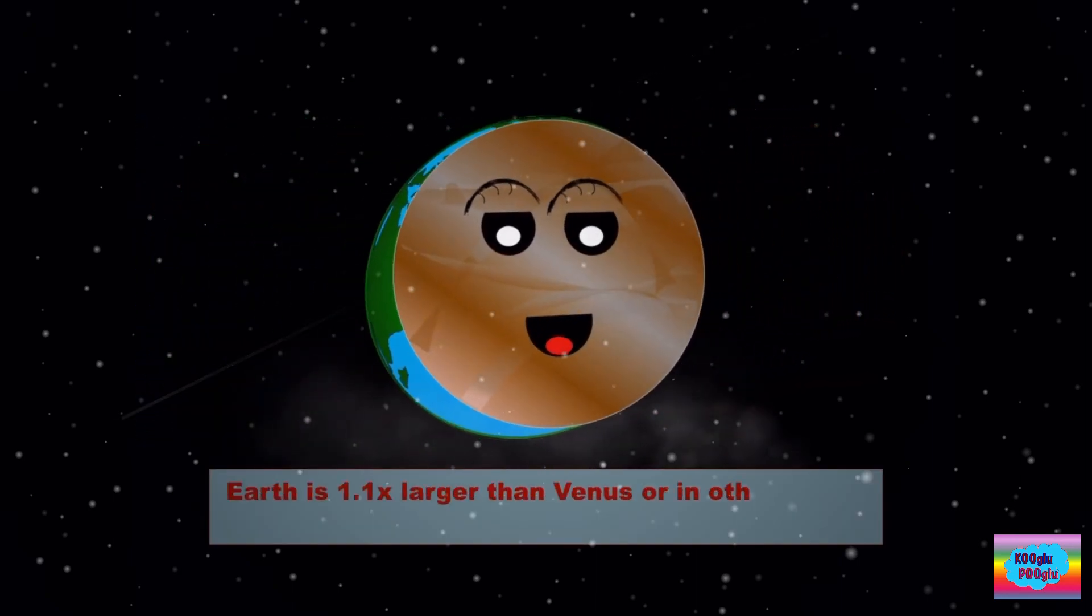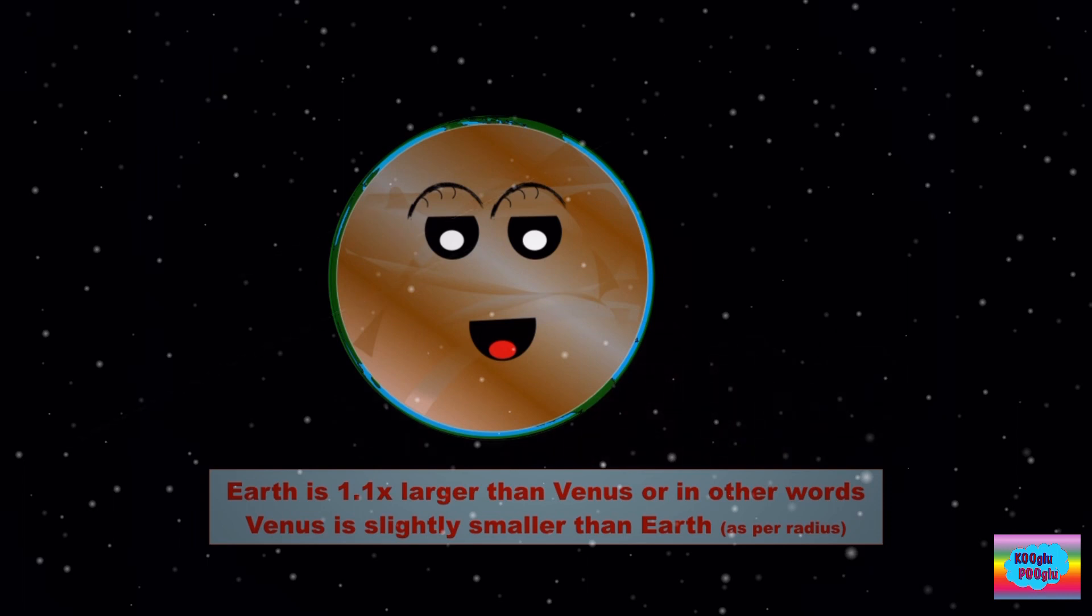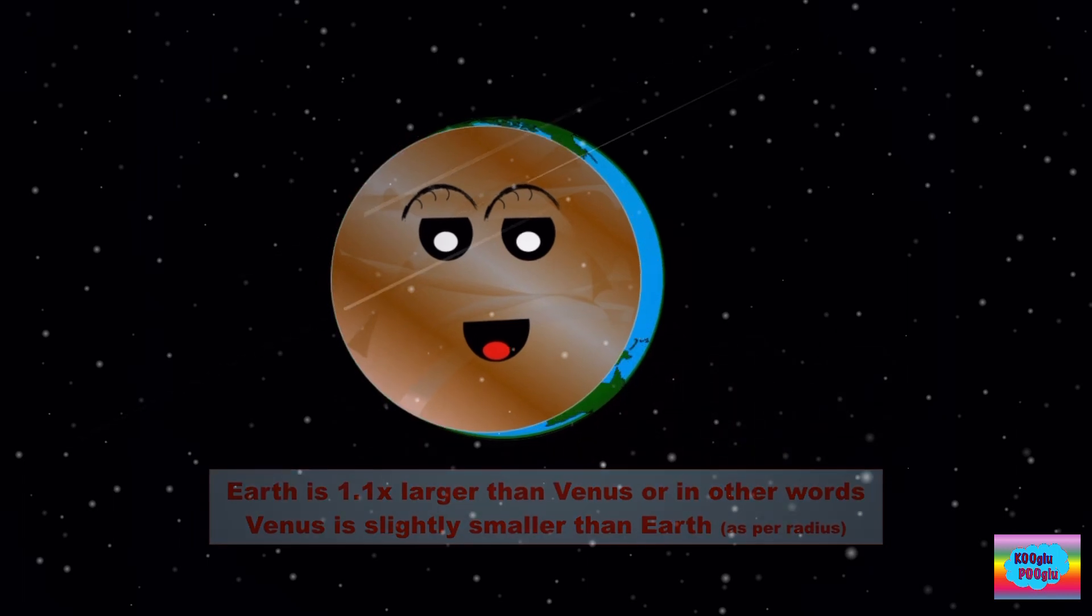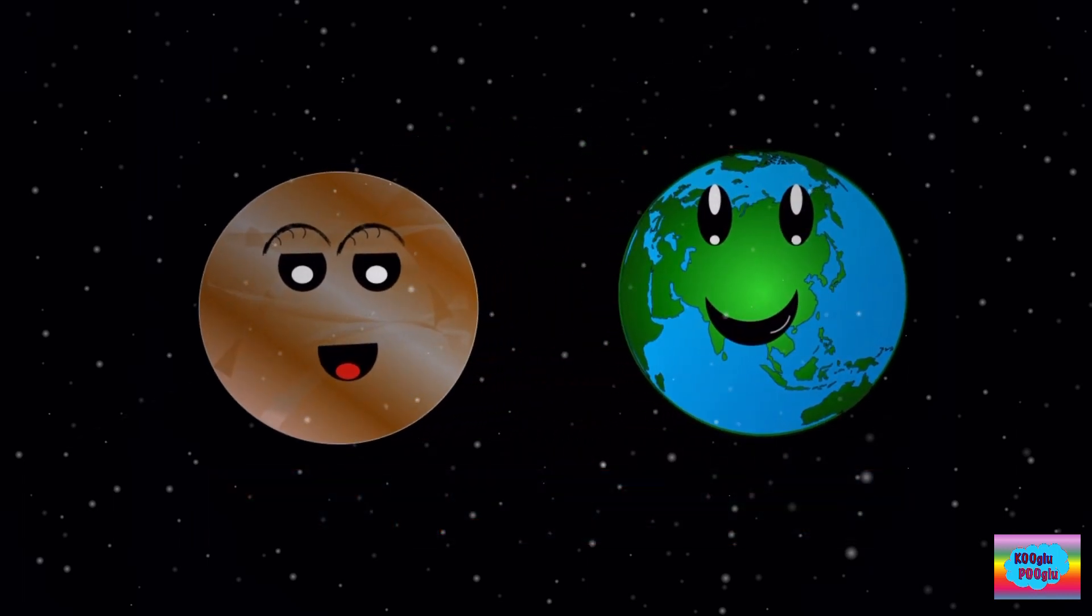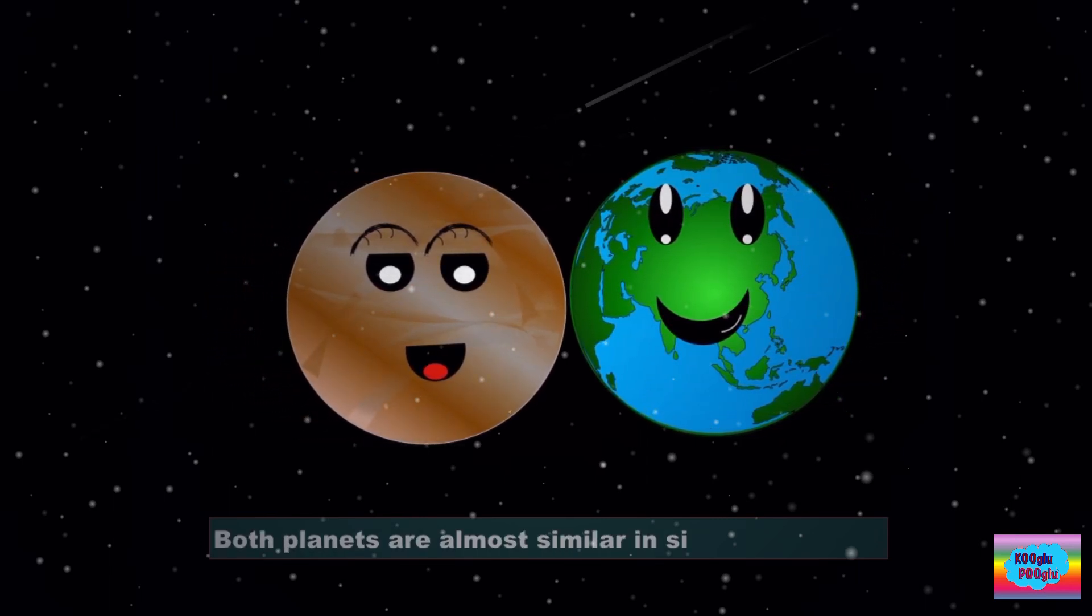Earth is 1.1 times larger than Venus. In other words, Venus is slightly smaller than Earth. Both planets are almost similar in size and volume.